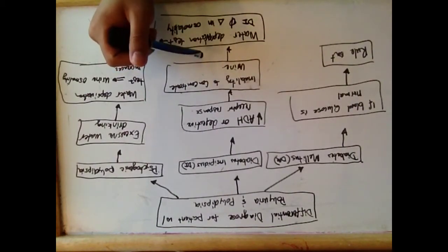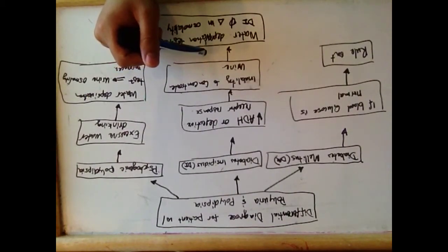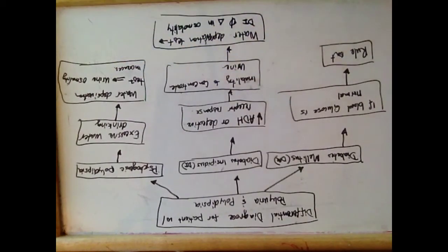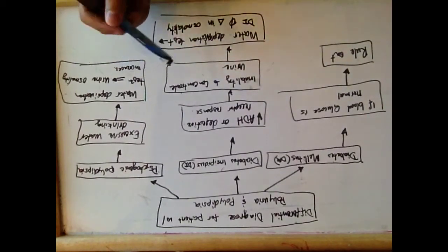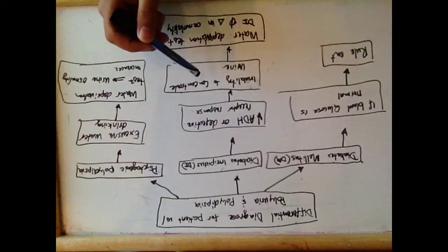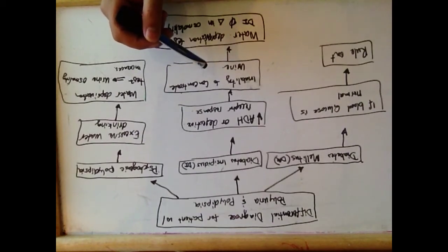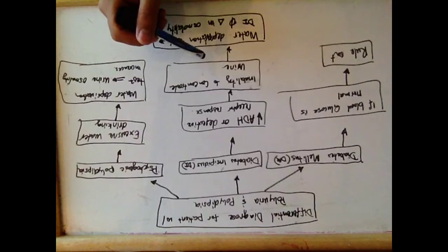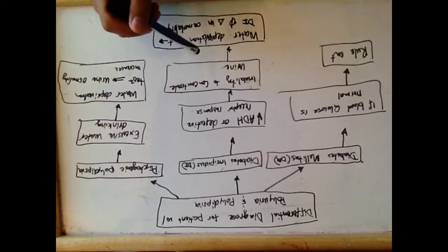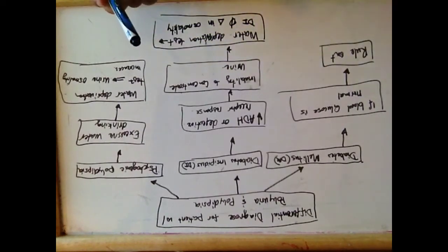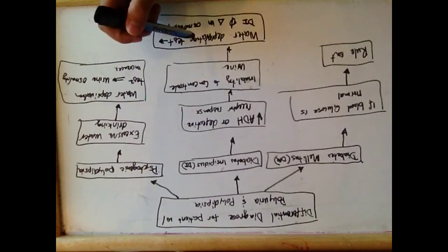We will give them a water deprivation test — deprive them of water to see if the kidney is able to concentrate urine. Because the patient either has decreased ADH or a defective receptor, the urine osmolarity in patients with diabetes insipidus won't change.